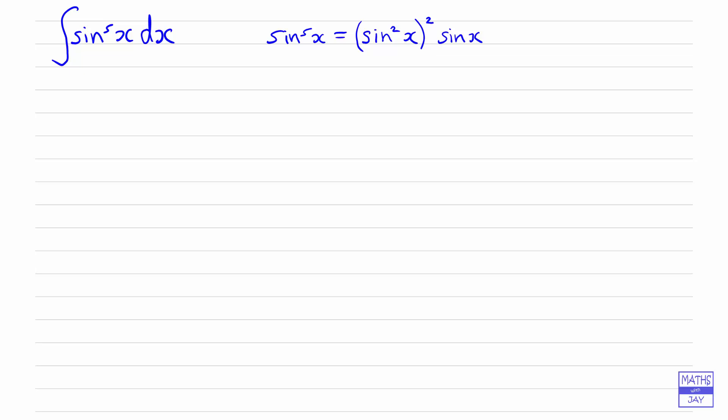So let's just remind ourselves of our really important identity. We know that cos squared x plus sine squared x is 1, or identically equal to 1, because it's true for any value of x. And that means that we can subtract cos squared x from both sides to say that sine squared x is equal to 1 minus cos squared x.